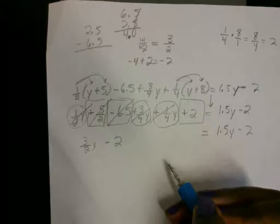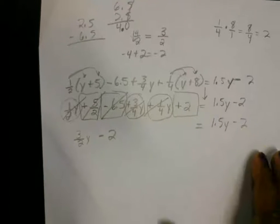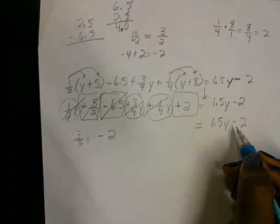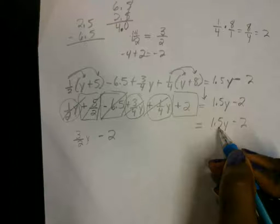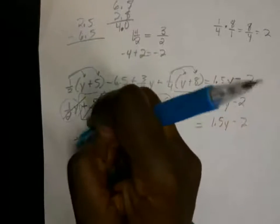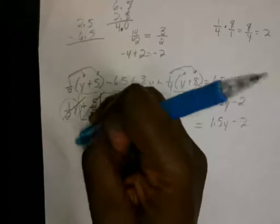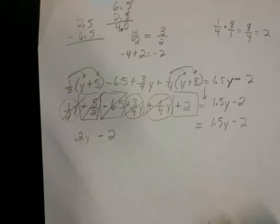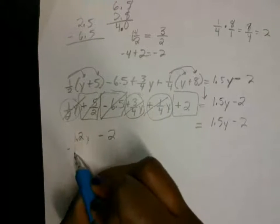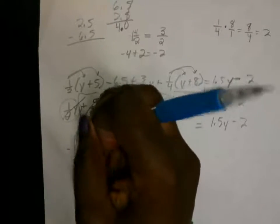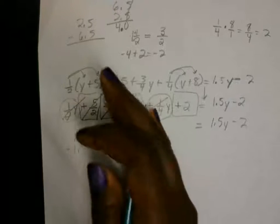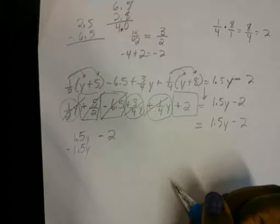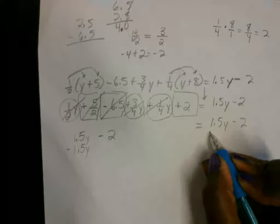So after you do that, you're going to move the variables to the same side. They got it all written as a decimal, so let's just write this back as a decimal. So this is 1.5. Now I'm going to move the 1.5y over here by subtracting 1.5y on both sides. When I subtract 1.5 on both sides, 1.5y on both sides, when I subtract, look at what happens.